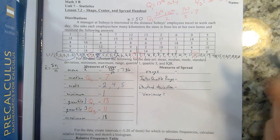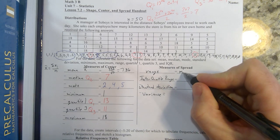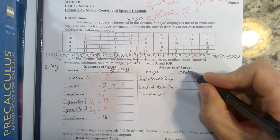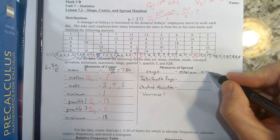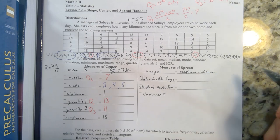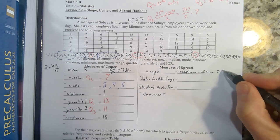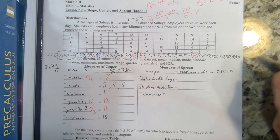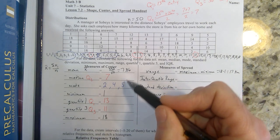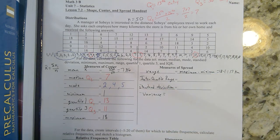Our first measure is range. Range is pretty simple. Take your maximum value and subtract your minimum value. In this case, we would have 18 minus 1. So our range is 17 kilometers.